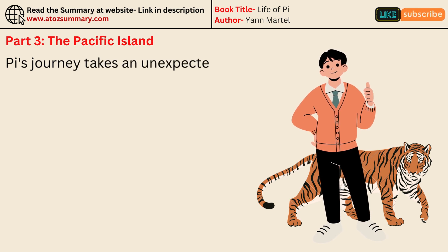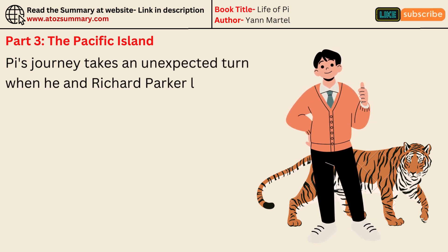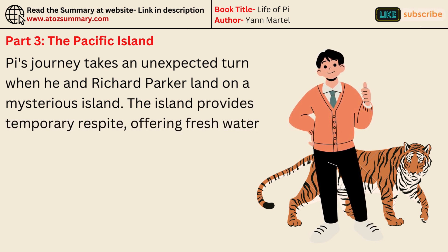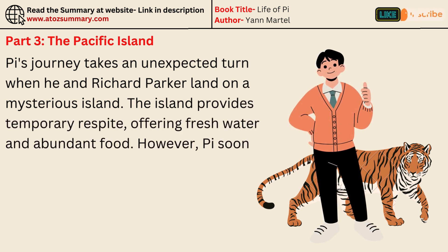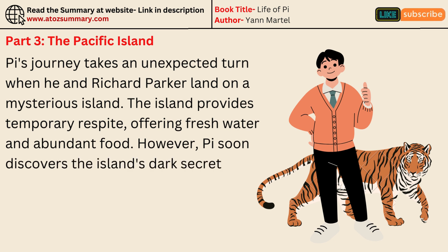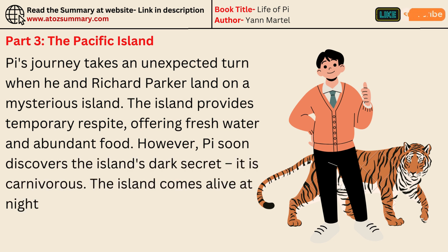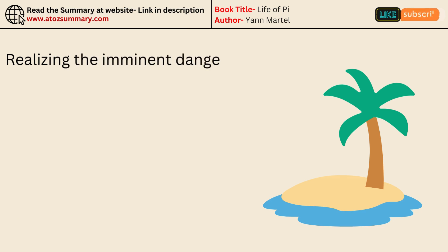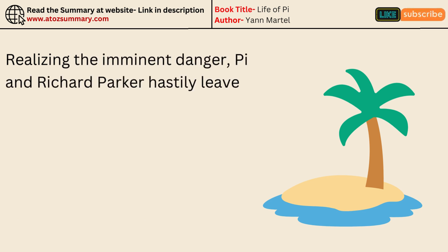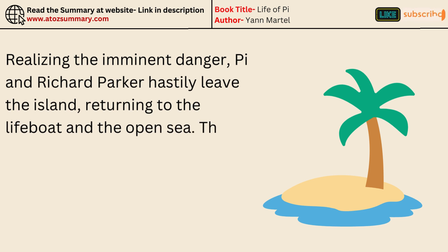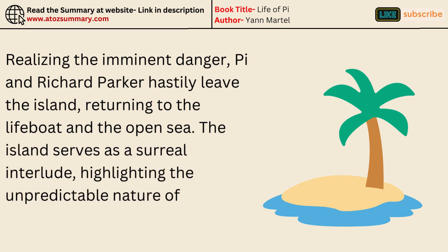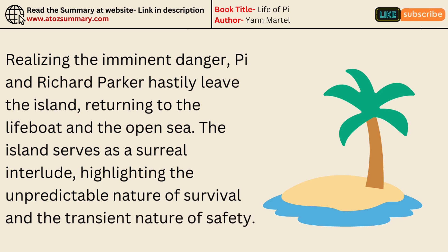Pi's journey takes an unexpected turn when he and Richard Parker land on a mysterious island. The island provides temporary respite, offering fresh water and abundant food. However, Pi soon discovers the island's dark secret — it is carnivorous. The island comes alive at night with acidic pools, consuming anything that remains on its surface. Realizing the imminent danger, Pi and Richard Parker hastily leave the island, returning to the lifeboat and the open sea. The island serves as a surreal interlude, highlighting the unpredictable nature of survival and the transient nature of safety.